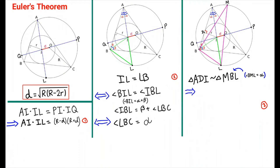Next, we use similar triangles — specifically triangles A-D-I and B-M-L. These are similar because A-D is tangent to circle I, making it perpendicular. Angle B-M-L is a right angle since line M-L is the diameter of circle O. Angle B-M-L equals alpha since it shares the same arc as angle D-A-I, which is also alpha. Therefore these two triangles are similar.